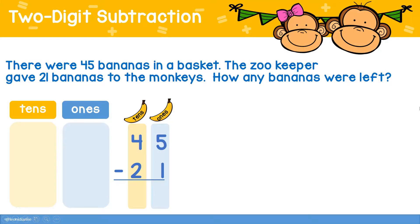Hello and welcome to two-digit subtraction. Let's take our first problem. There were 45 bananas in a basket. The zoo keeper gave 21 bananas to the monkeys. How many bananas were left?